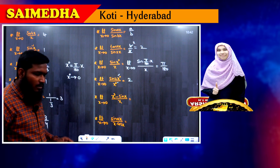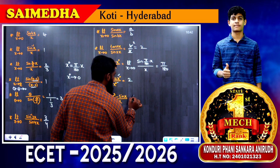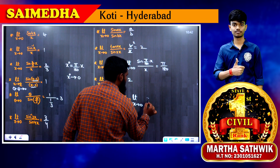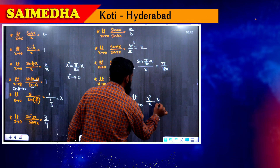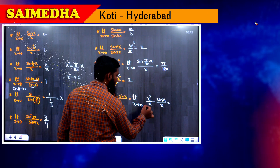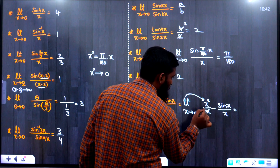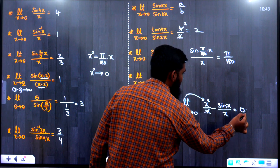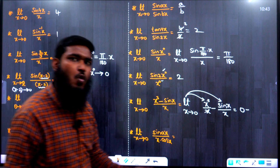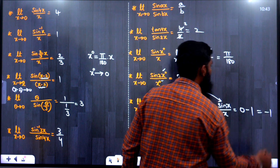Next: lim x→0, (x³ − sin(x))/x. Split the denominator: x³/x − sin(x)/x = x² − sin(x)/x. Applying the limit: x²→0 gives 0, and sin(x)/x = 1. So the answer is 0 − 1 = −1.